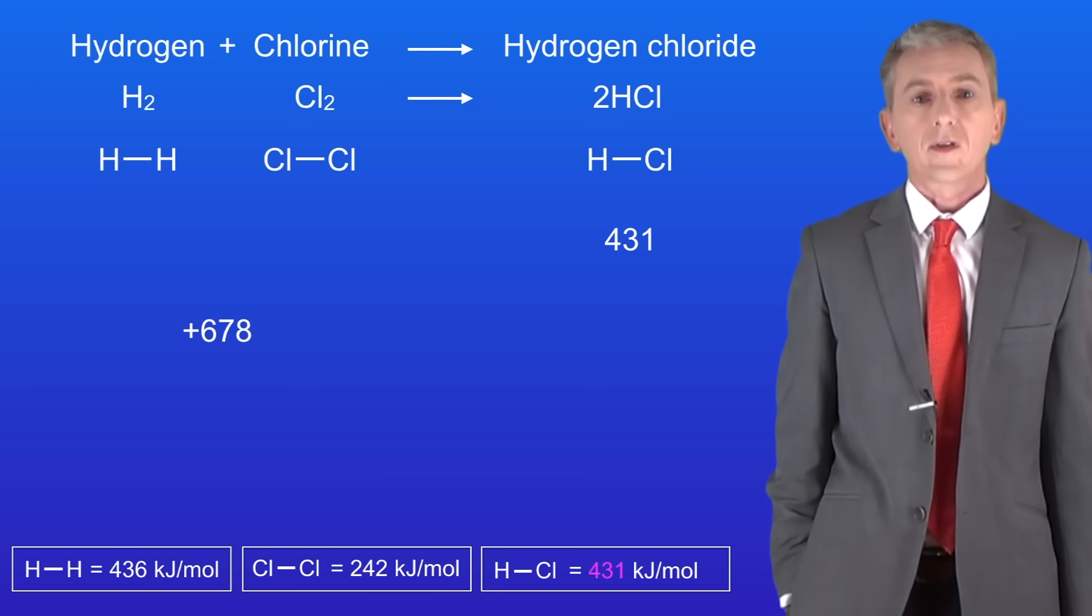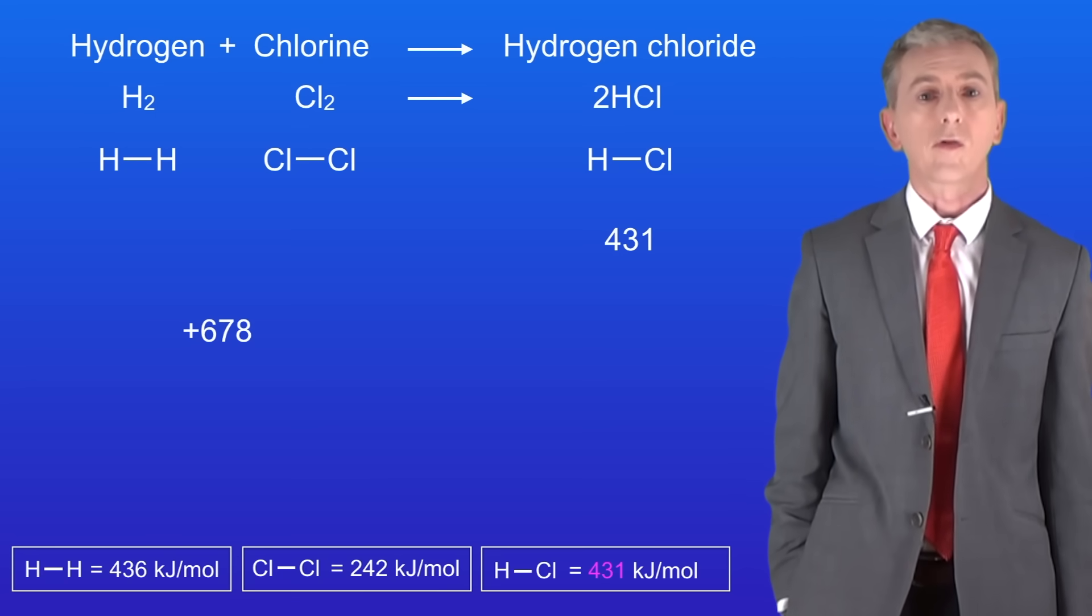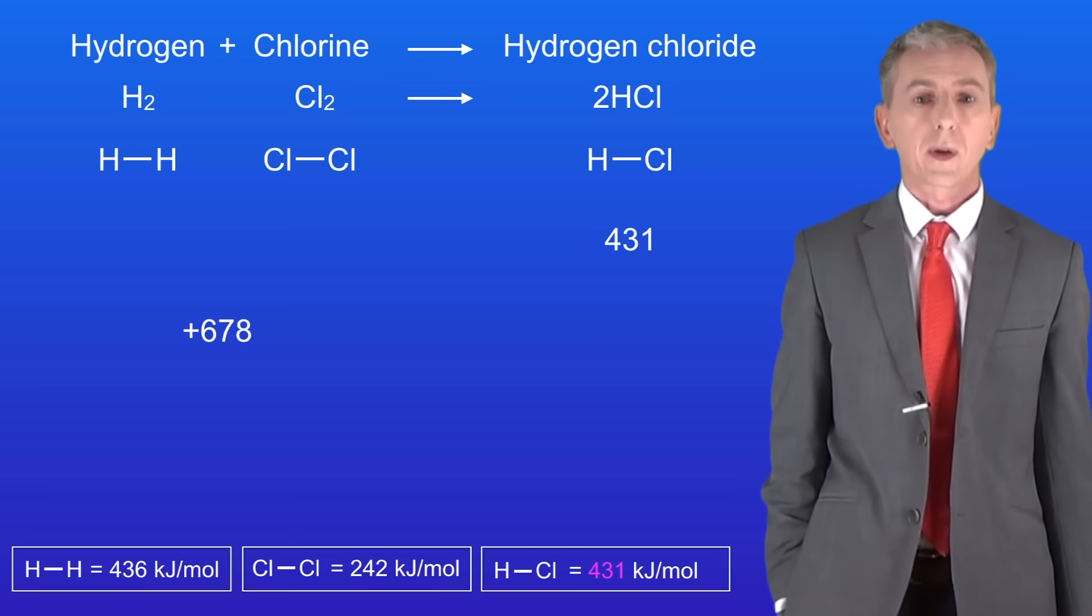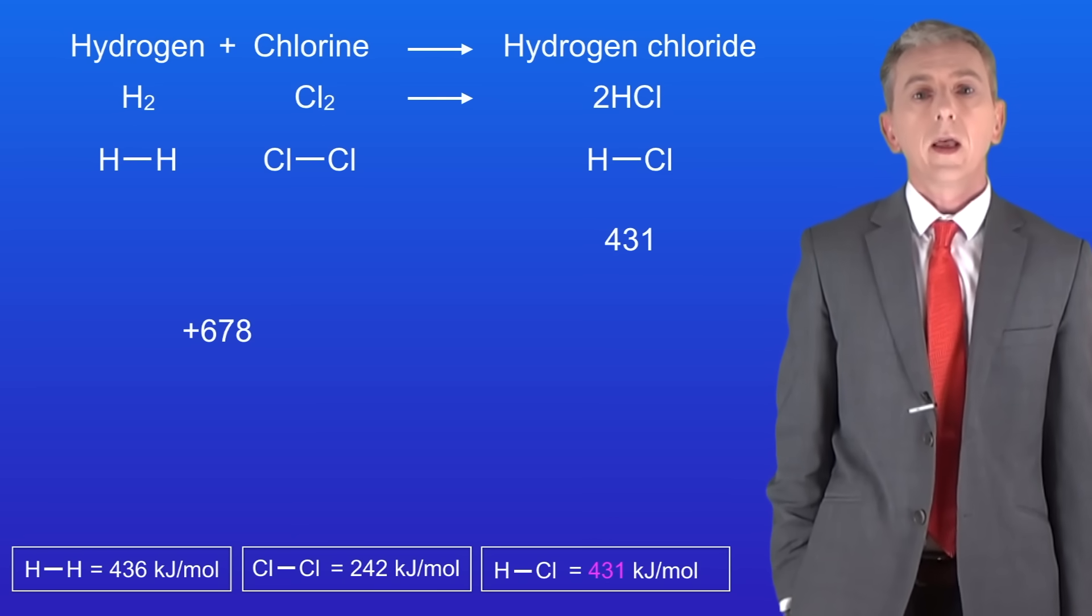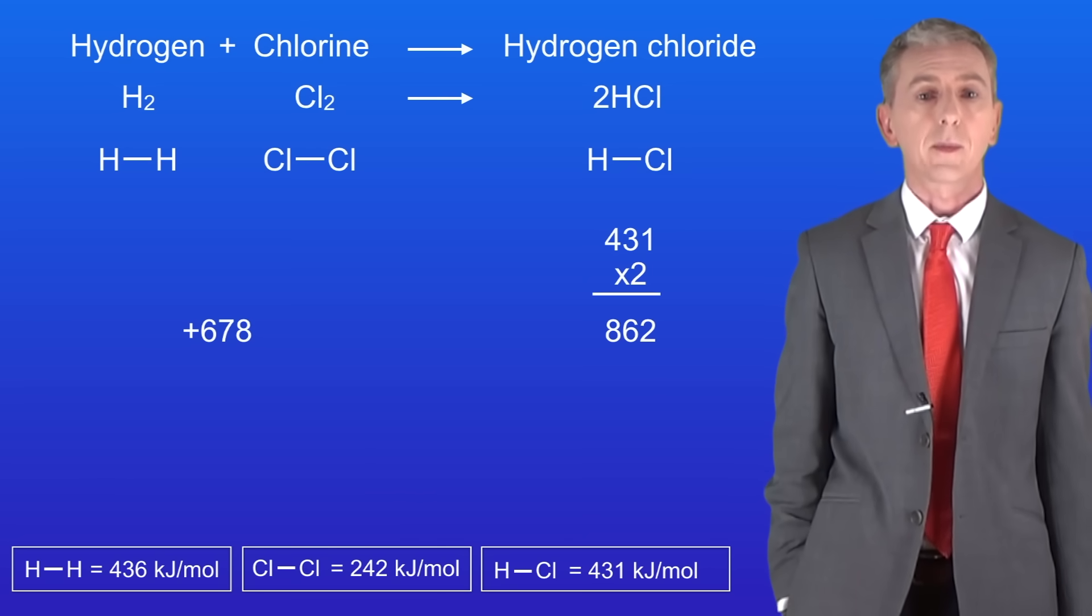Now you'll notice that we're actually making two molecules of hydrogen chloride, which means that we're making two lots of this bond, so we need to multiply this value by 2. This gives us a total value of 862 kilojoules of energy by making these bonds.